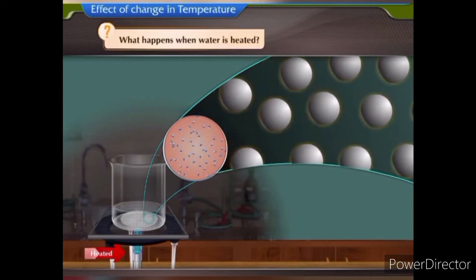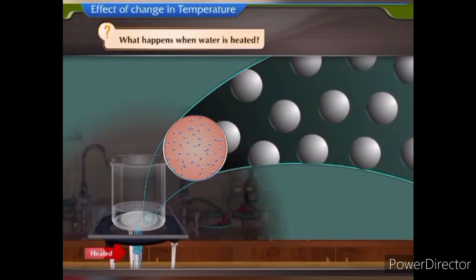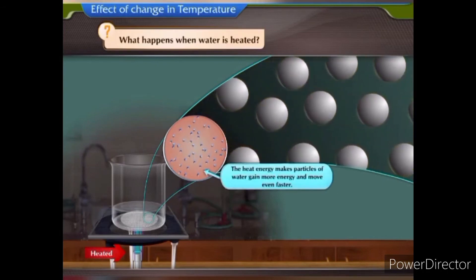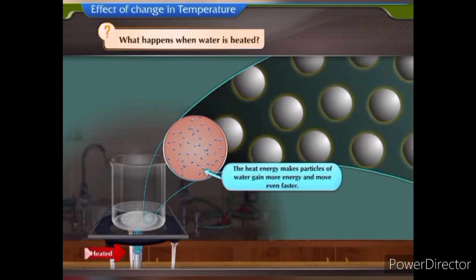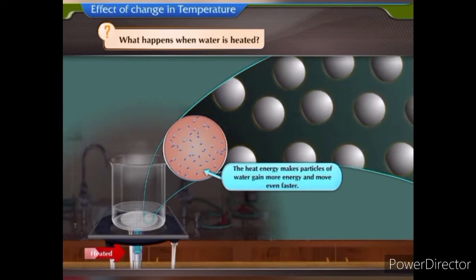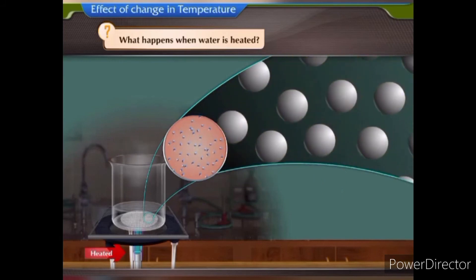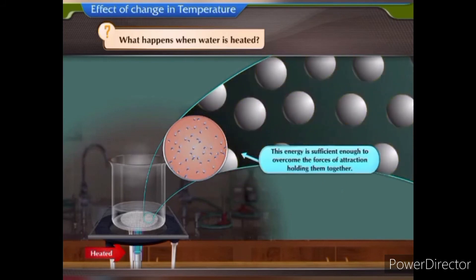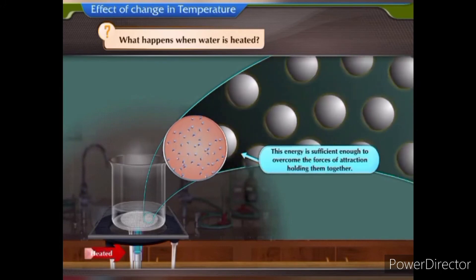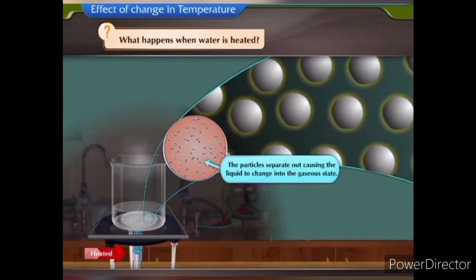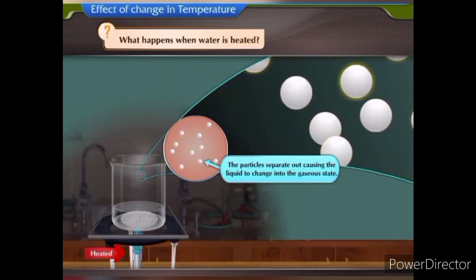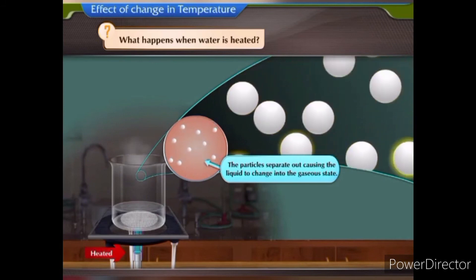What happens when water is heated? When water is heated, the heat energy makes the particles of water gain more energy and move even faster. This energy is sufficient enough to overcome the forces of attraction holding them together. The particles separate out, causing the liquid to change into the gaseous state.